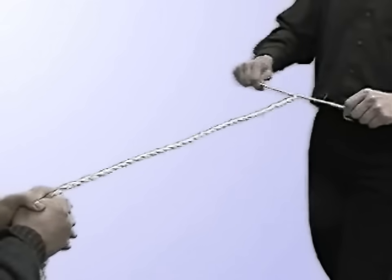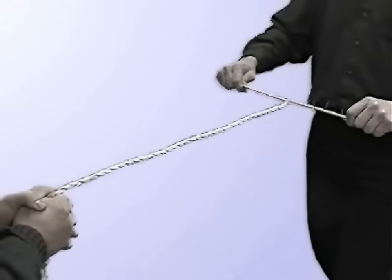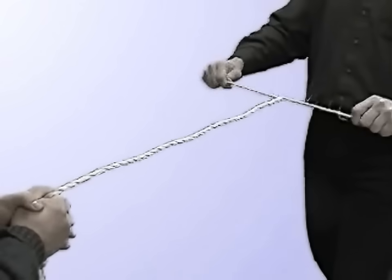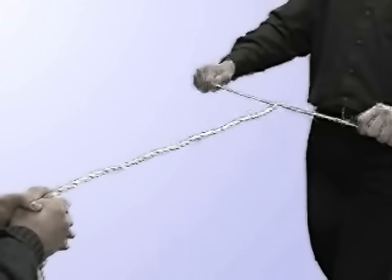As you pull the strands apart, twisting tension builds up in the rest of the coiled portion. It is actually adding one twist to the remaining rope for each twist pulled out of it.